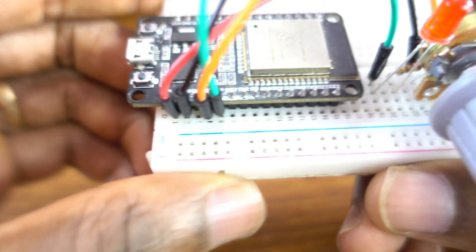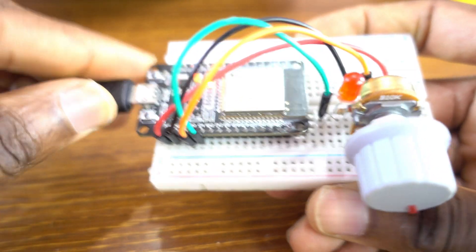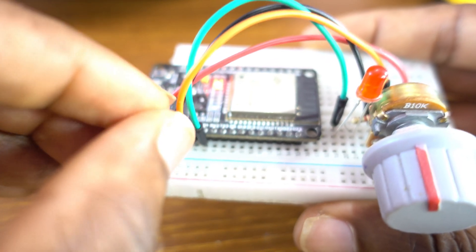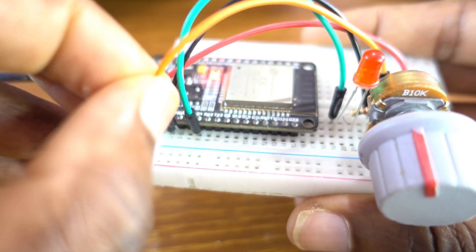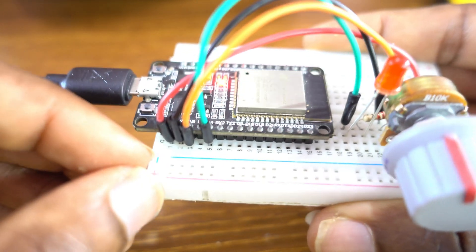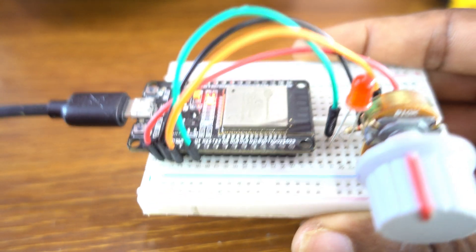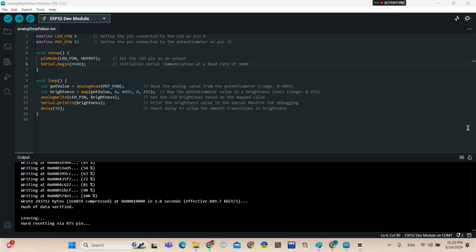Everything looks good. Connect the cable — this wire goes to GPIO15, not GPIO2. This is the circuit diagram for the two methods we'll be using today.